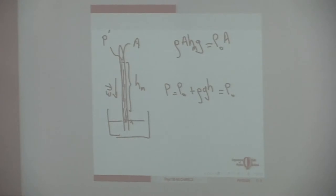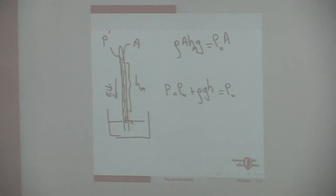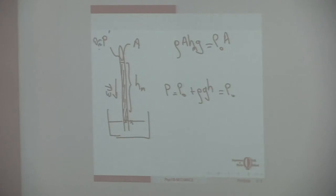To be more precise, here it is not pure vacuum — there is some mercury vapor over there, a very small amount of mercury vapor that creates a very small pressure. But that amount is very small and we can ignore it. In that limit, P prime is almost zero. So we can just cancel the A's, and what is left is: P₀ = ρ × g × H_mercury.